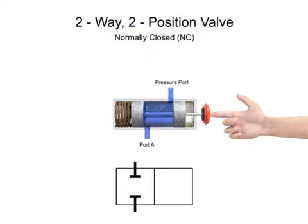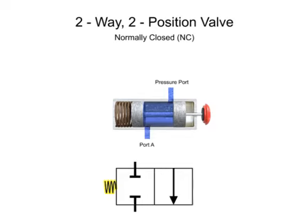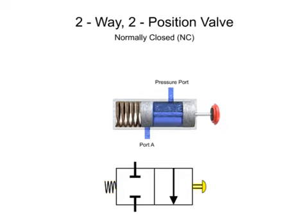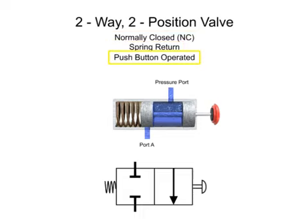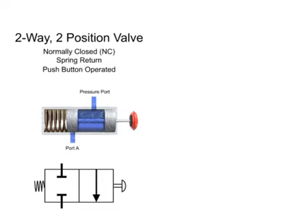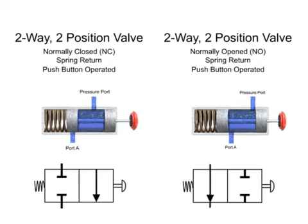When the valve is actuated, fluid is allowed to flow from the pressure port to port A. A spring returns the valve to its normally closed position, and a push button actuates it to the open position. Therefore, this valve is a two-way, two-position, normally closed, spring return, push button operated valve. While it is similar to the previous example, the differences in the normal position make it a distinctly different valve.